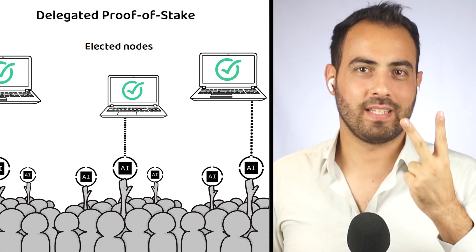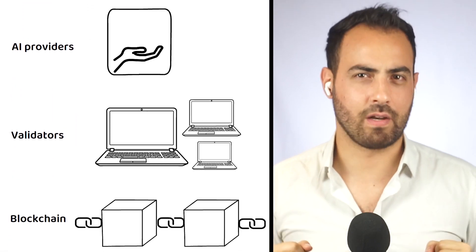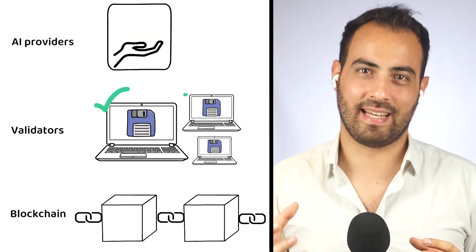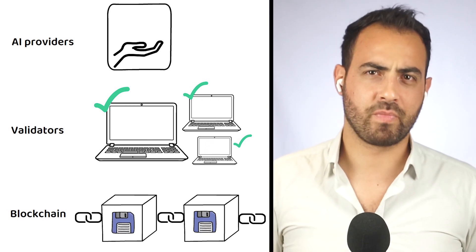However, the second task of the validators is something more unique to the Orichain itself, and that is to collect data from AI providers and validate that data before they are written to the blockchain to ensure accuracy.